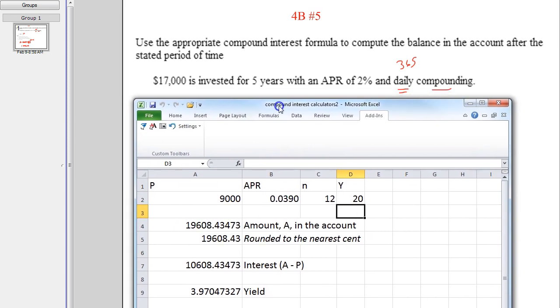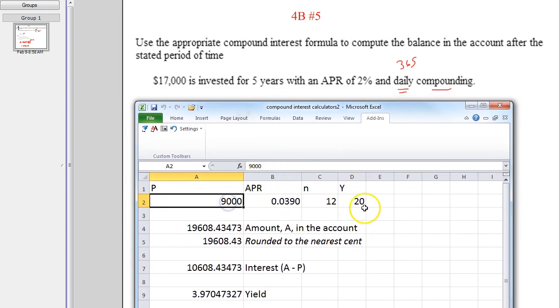The way you use it is you identify these four values. P is the 17,000. APR, we write it as a decimal, 2% as a decimal is 0.02. N is the number of compound periods per year, so 365. And then Y is the number of years, so 5.